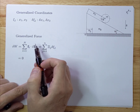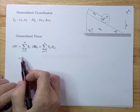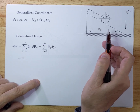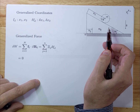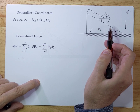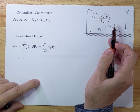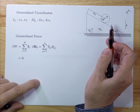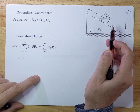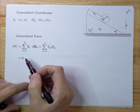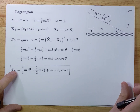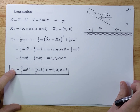There are no generalized forces here — they are zero. There are no non-conservative forces of any kind: no springs, no resistance or anything like that. So the generalized forces are zero.